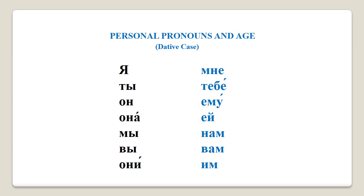Now let's have a look at the full list of all personal pronouns in the dative case, which are needed for the age construction. I'm going to read each word out twice and I would encourage you to repeat after me: мне, тебе, ему, ей, нам, вам, им. Excellent! Well done!